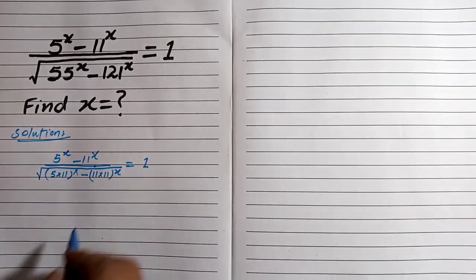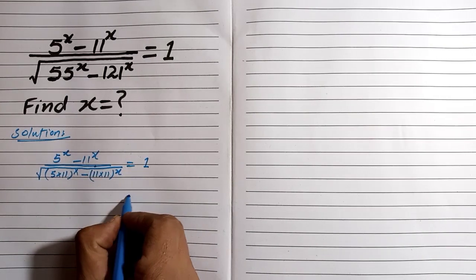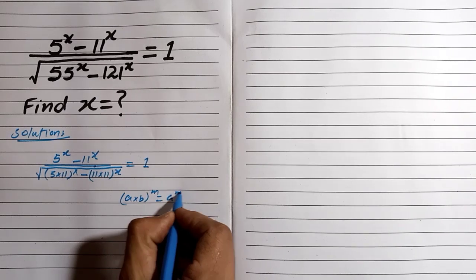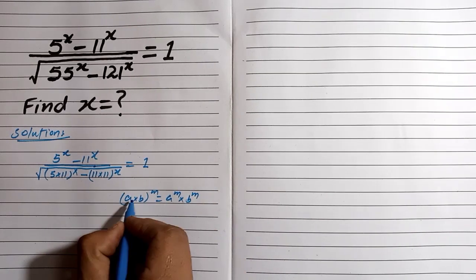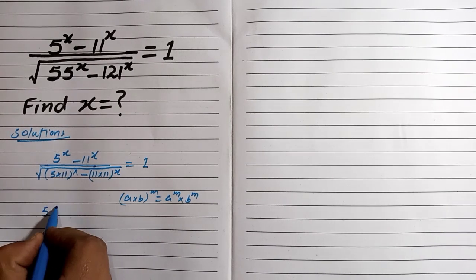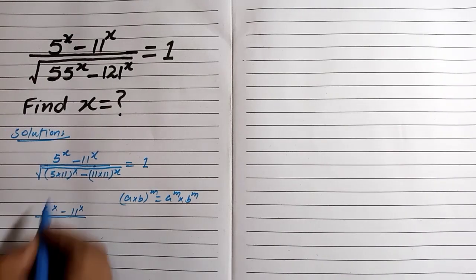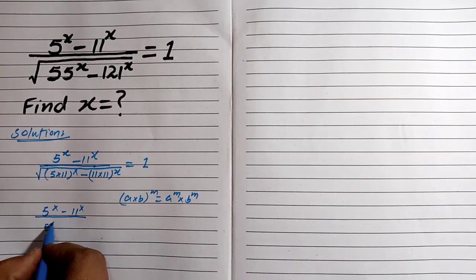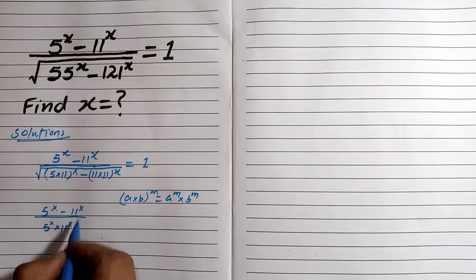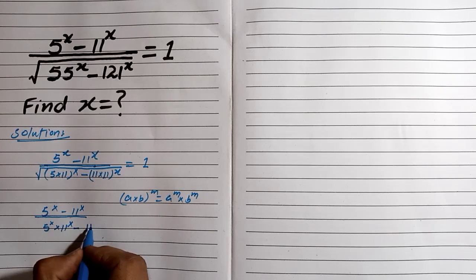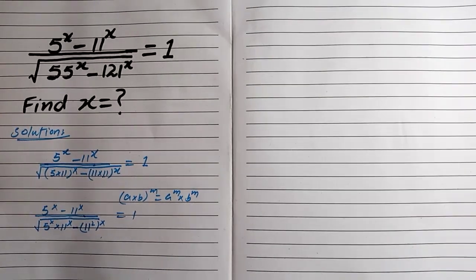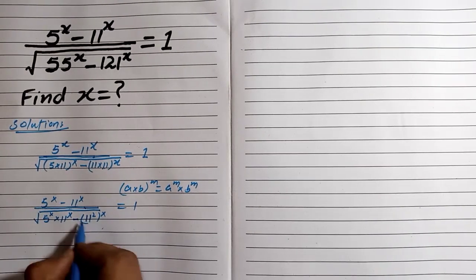In this root term we are using the power rule: a·b to the power m equals a^m · b^m. We use this rule on the root term. So in this equation we have 5^x minus 11^x divided by 5^x multiply 11^x, and in this root we write this term in power form which is 11 squared to the power x, which is equal to 1.